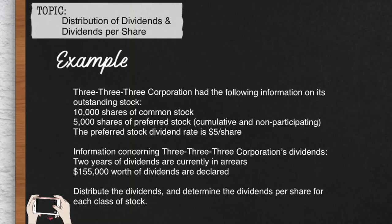Here is the information concerning the corporation's dividends. There are two years of dividends that are currently in arrears. Arrears means that dividends are owed to the stockholders. $155,000 worth of dividends were declared by the Board of Directors. This problem requires that we distribute the dividends and determine the dividends per share for each class of stock — both the preferred stock and the common stock.